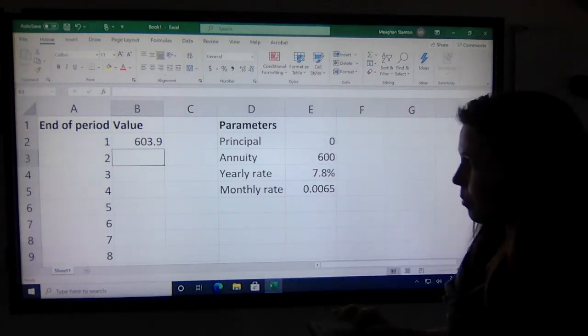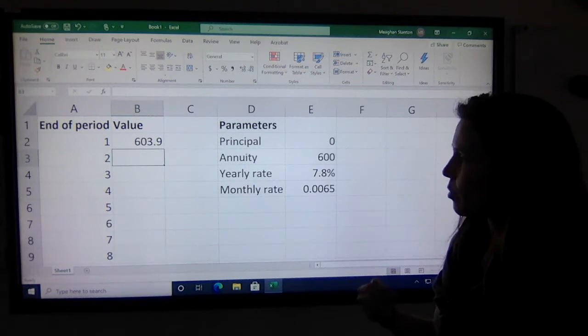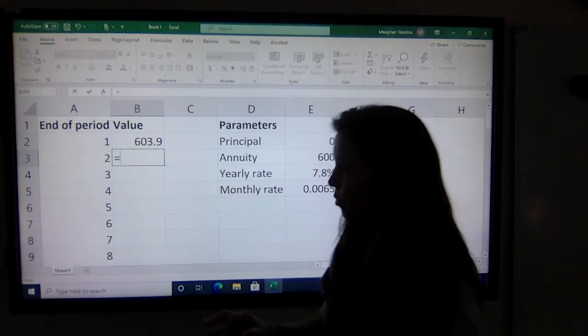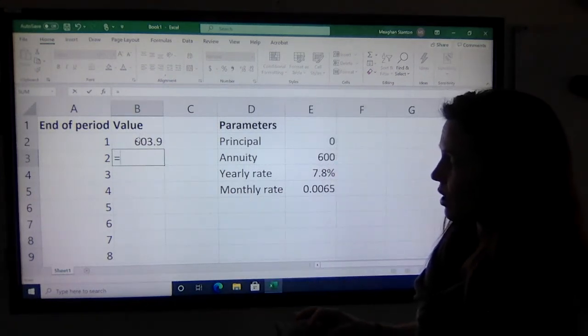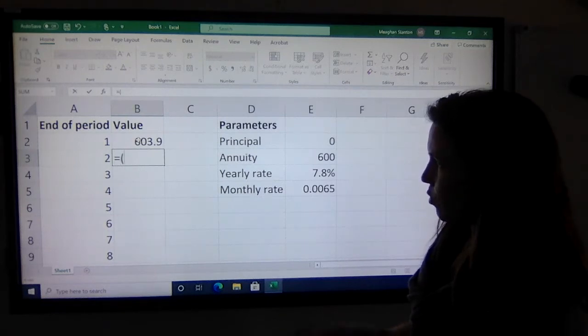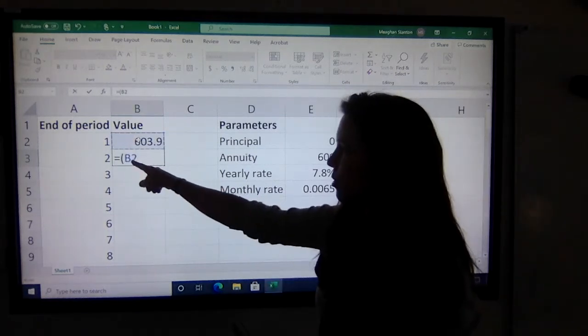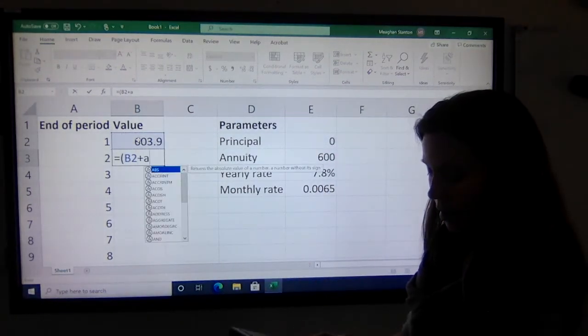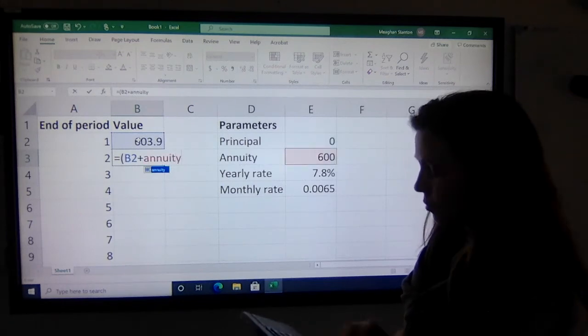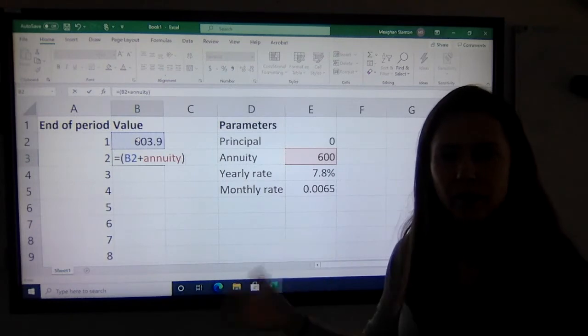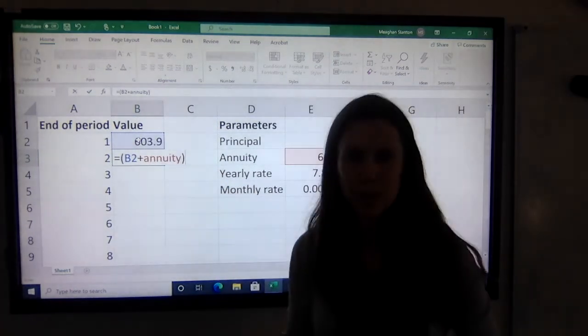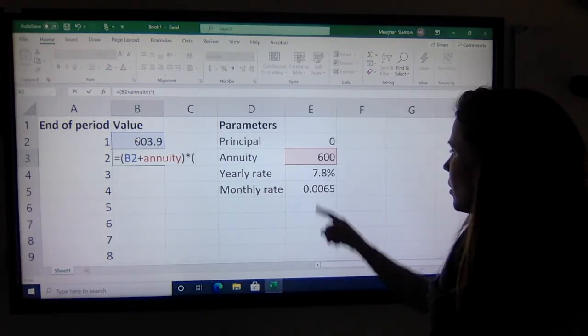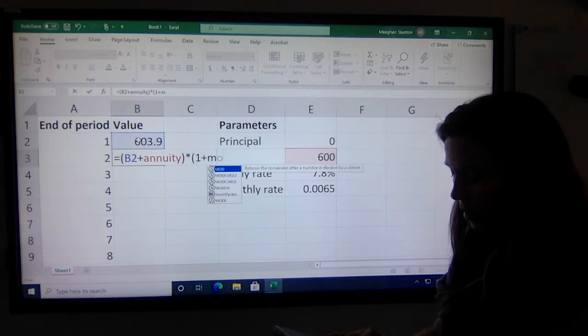Now in the second month, what happens? Equals. We need to start with what we had in this cell, so let's just click on that cell. In fact, we'll put brackets first because we want B2, and then we want to put our $600 in, so let's add the annuity. Now that puts all of Jesse's money in there for the second month—the amount she started with plus the new $600 installment. At the end of the month, what happens? We need to multiply it by one plus the monthly rate.